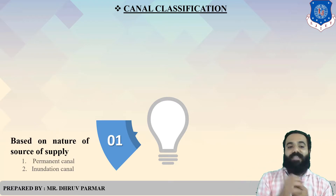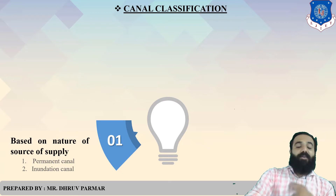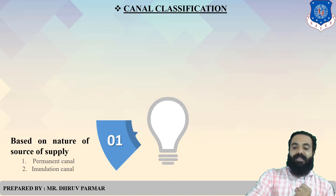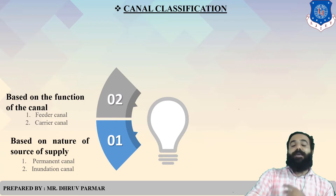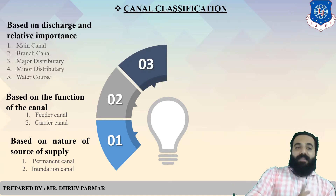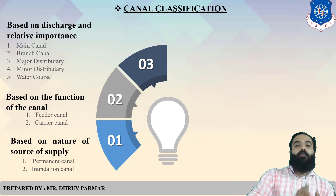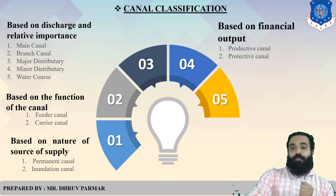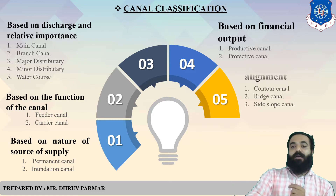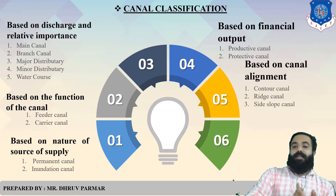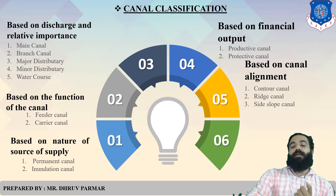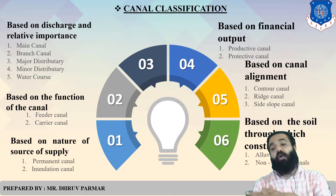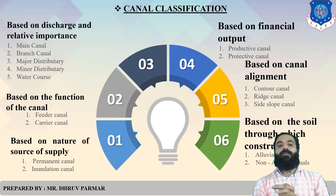The first classification is based on the nature of source of supply: Permanent Canal and Inundation Canal. The second classification is based on function: Feeder Canal and Carrier Canal. Third, based on discharge: Main, Branch, Major Distributory, Minor Distributory, and Waterways. Fourth, based on financial output: Productive and Protective. Fifth, based on canal alignment: Contour Canal, Ridge Canal, and Side Canal. And the last classification is based on the soil through which the canal passes: Alluvial soil and Non-alluvial soil.